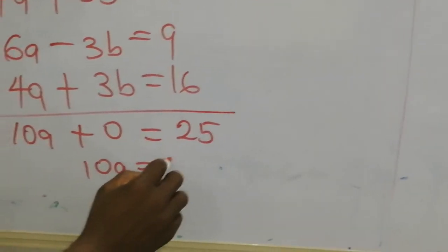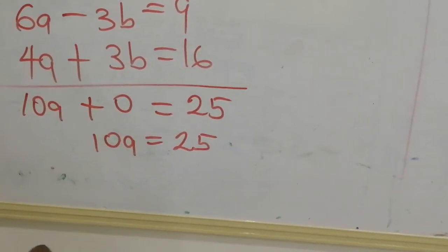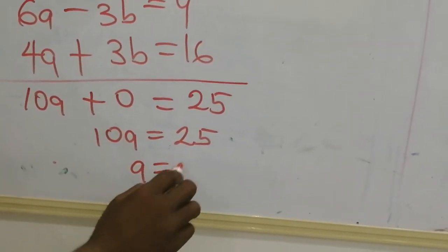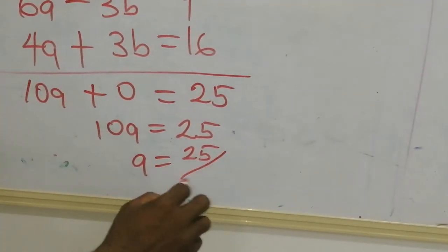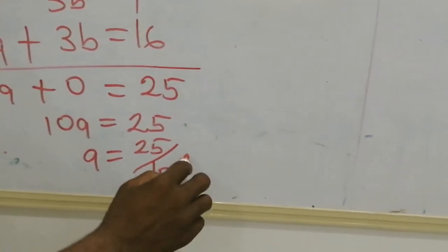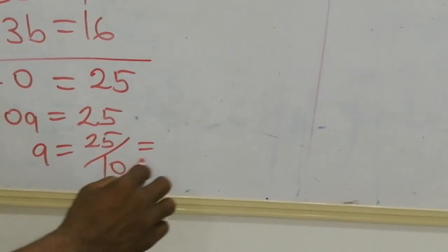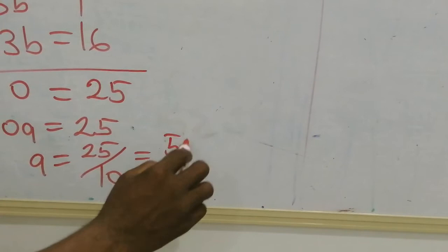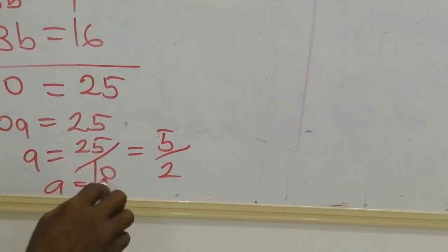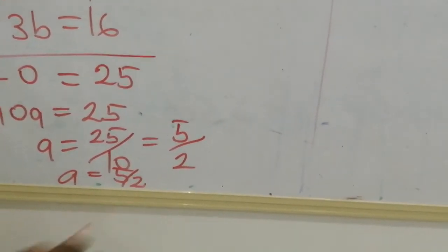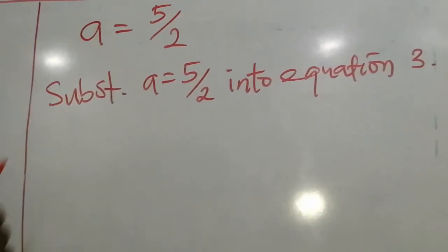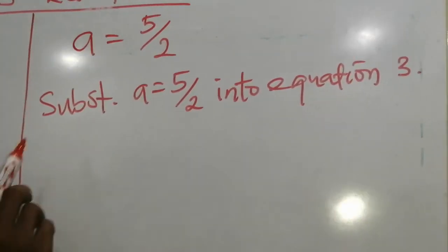We now have 10a equals 25. To get your a, you divide both sides by 10. 25 divided by 10: 5 goes into 10 two times, 5 goes into 25 five times. Then a is equal to 5 over 2.